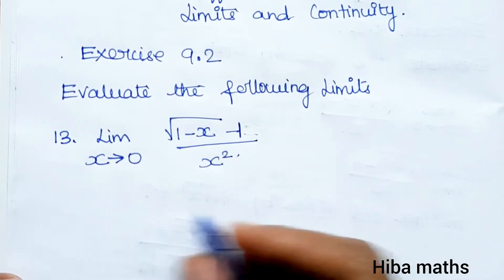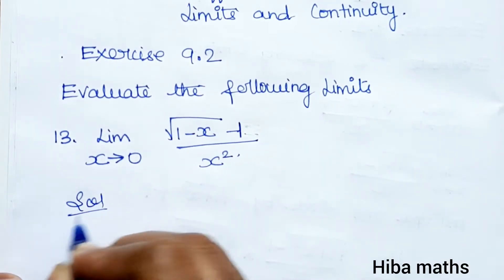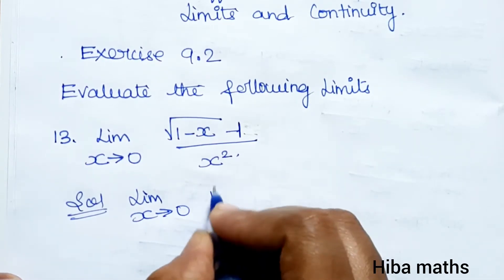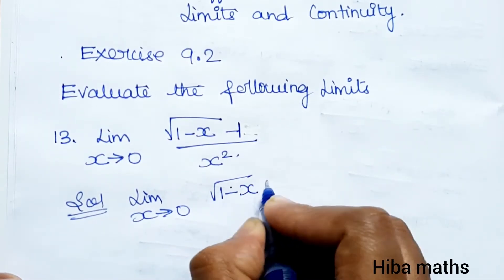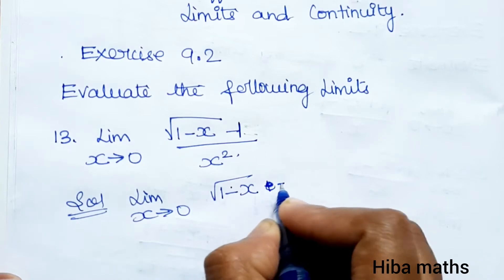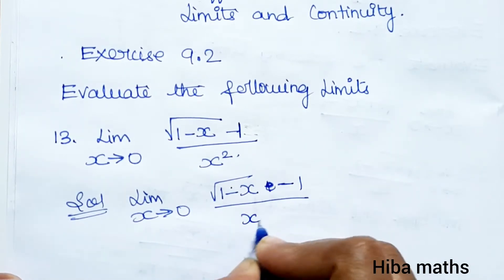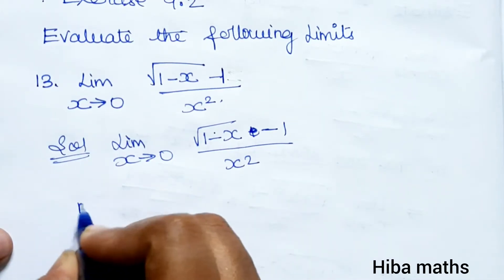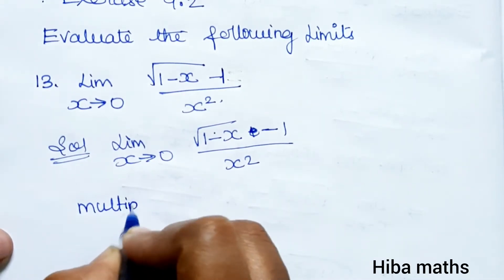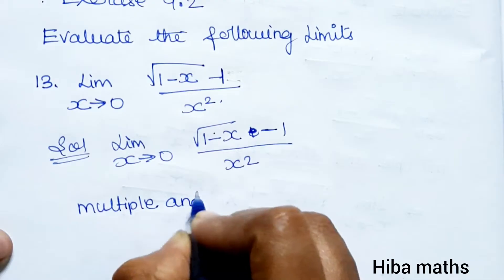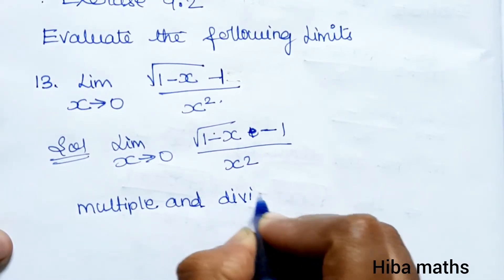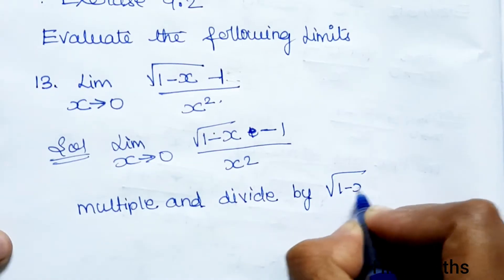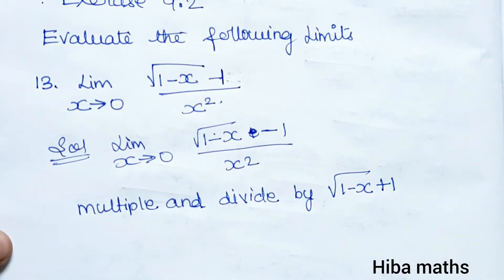We can use the conjugate method. Limit as x tends to 0 of root of (1 minus x) minus 1, divided by x squared. Next line: we multiply and divide by root of (1 minus x) plus 1.